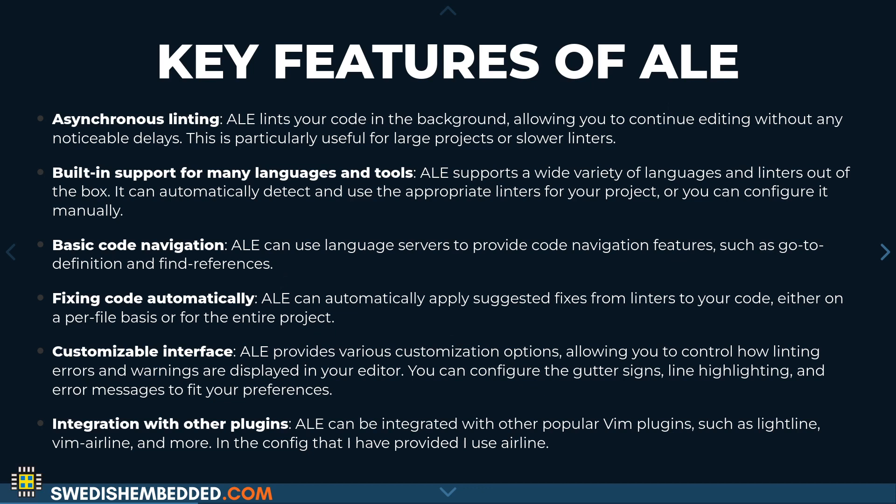You can also customize the interface — there are a lot of different options related to it. ALE does integrate with other plugins such as Conqueror of Completion, which does more advanced code completion tasks and can pass those results to ALE. It can also integrate with the status line to show results there. But primarily, the main use of it is inline displaying of lint errors directly in the editor.